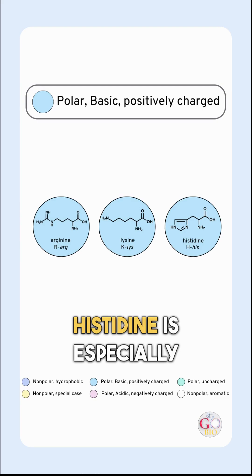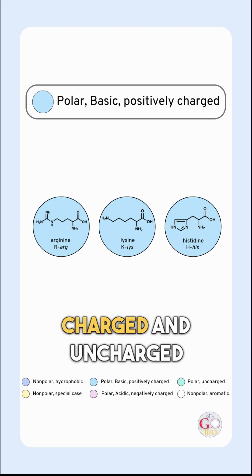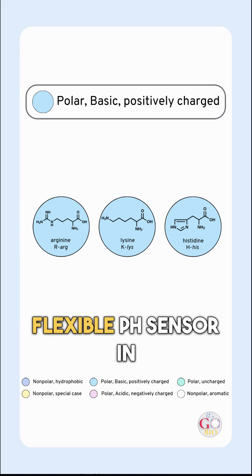Histidine is especially unique. It can shift between charged and uncharged forms, making it a flexible pH sensor in enzymes.